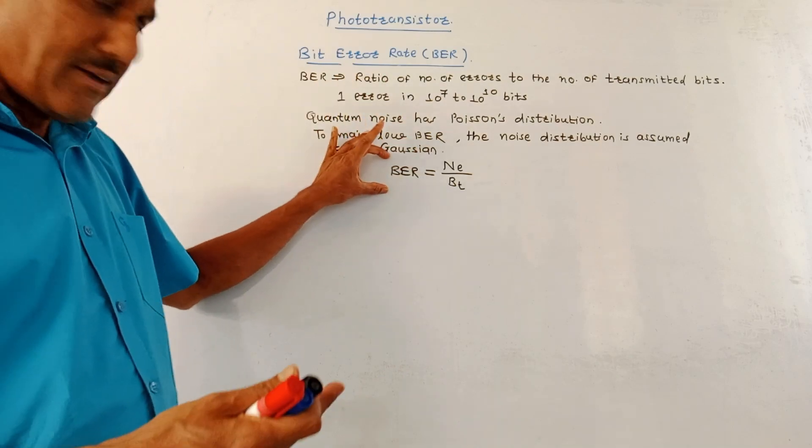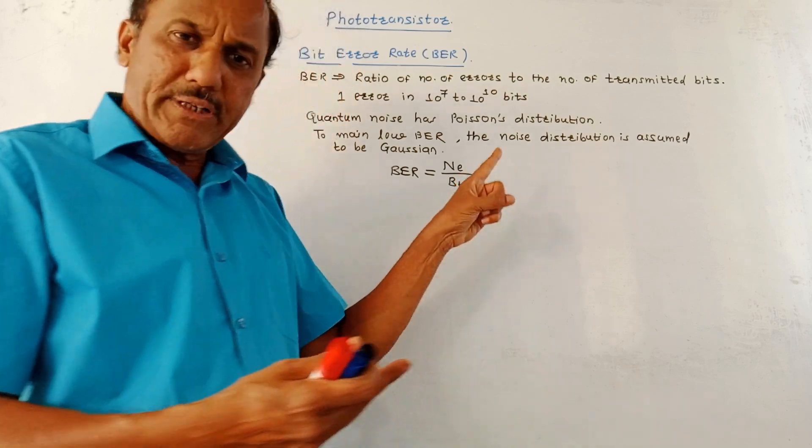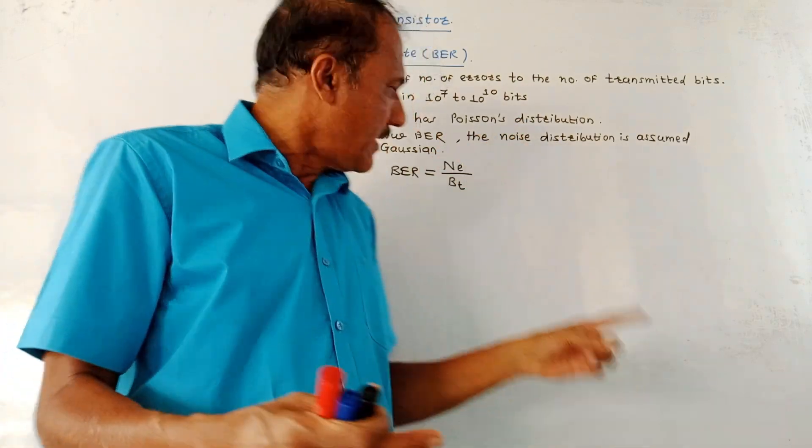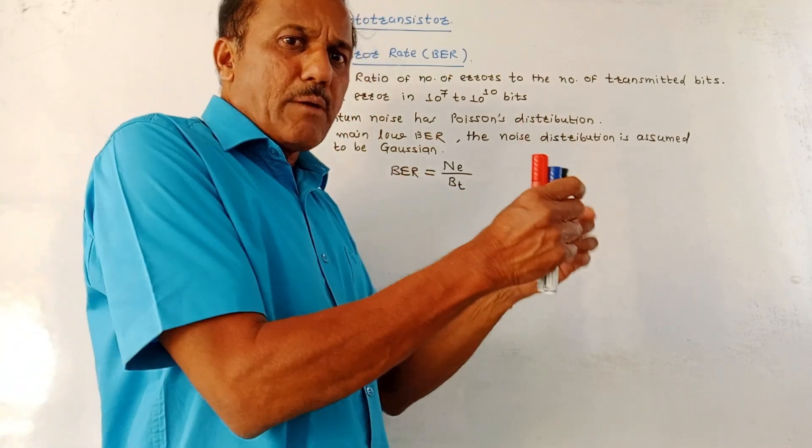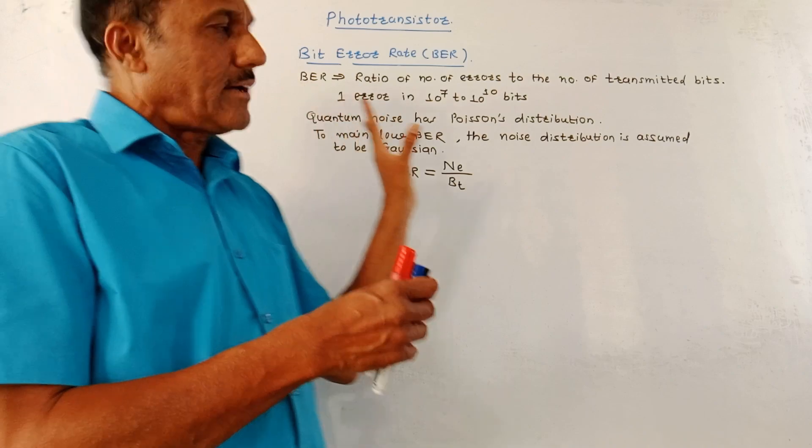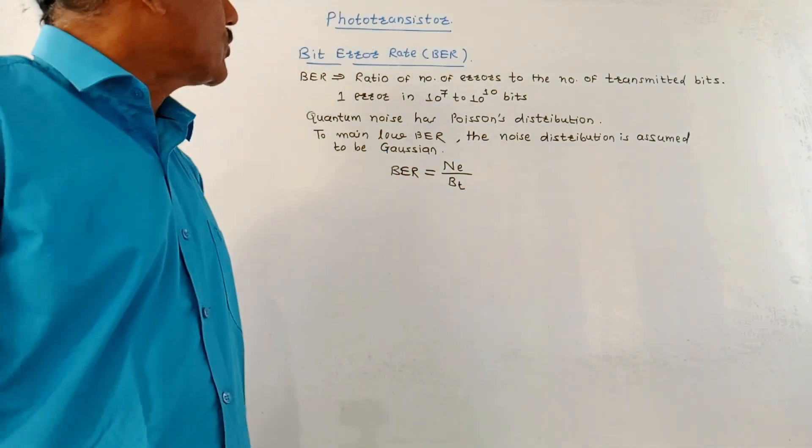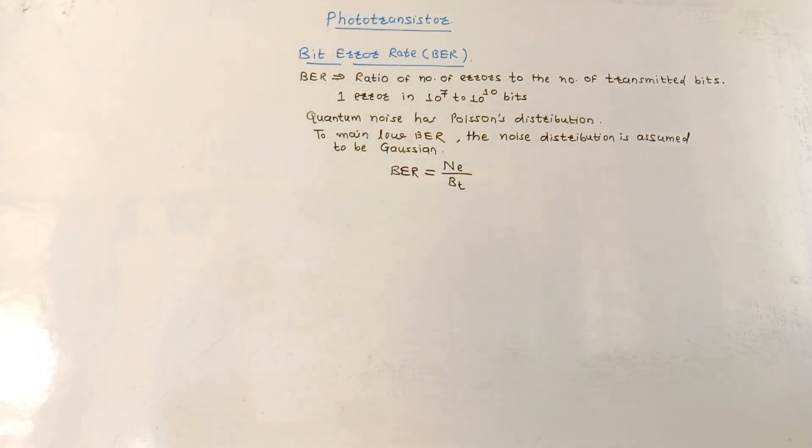This bit error rate mathematically can be expressed as NE upon BT. NE represents number of bits in error. BT represents the transmitted bits in a particular time period. This is about the concept of bit error rate. Now, dear students, that's it for today's session. Thank you. Thanks a lot for watching this video.